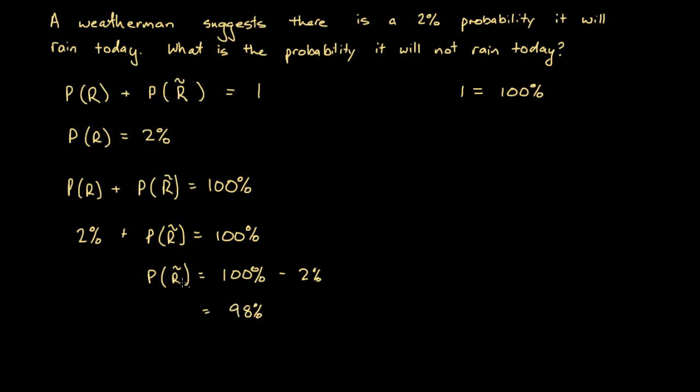So the probability it does not rain is 98%. So your gut feeling at the beginning, that it was 98%, if you had that gut feeling, then you were indeed correct.